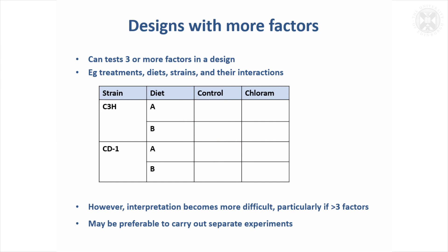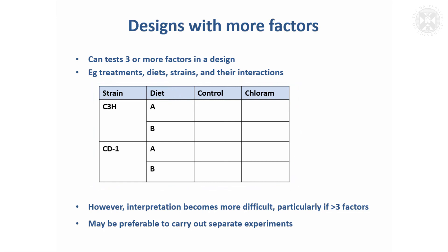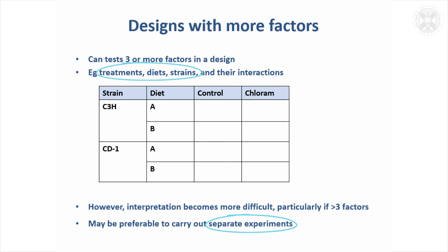We saw a one-factor design and a two-factor design. You can actually have designs with even more factors. This is a three-factor design where we might consider looking at the effects of diet as well in mice. Sometimes it's appropriate to do this, but it becomes quite a complicated design and more difficult to interpret. I would think carefully before including three different factors to study at once — it might be preferable to carry out separate experiments unless a three-way interaction between diet, treatment, and strain is particularly important.